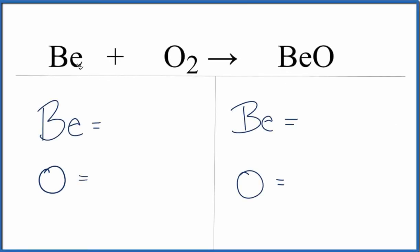To balance this equation, we have beryllium plus oxygen gas. That gives us this beryllium oxide here. Let's count the atoms up.